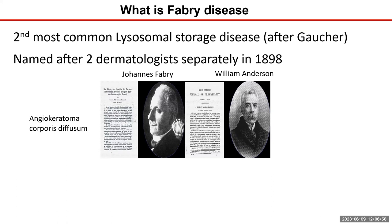The description was initially based on finding a typical skin rash called angiokeratoma on two children these two doctors saw separately. At that time, they didn't know what caused the rash, and the genetic basis and pathophysiology became evident much later. But ever since then, it's been described as a multi-organ disease, and now for the past two decades we have specific treatment for it.